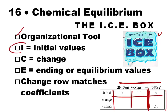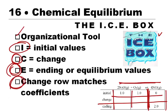The very last row is the ending information, or we say the equilibrium values, and then the change we have to go through to get from the initial to the ending equilibrium values. An important idea here is that this change row is the only row that actually matches the coefficients in our balanced equation.